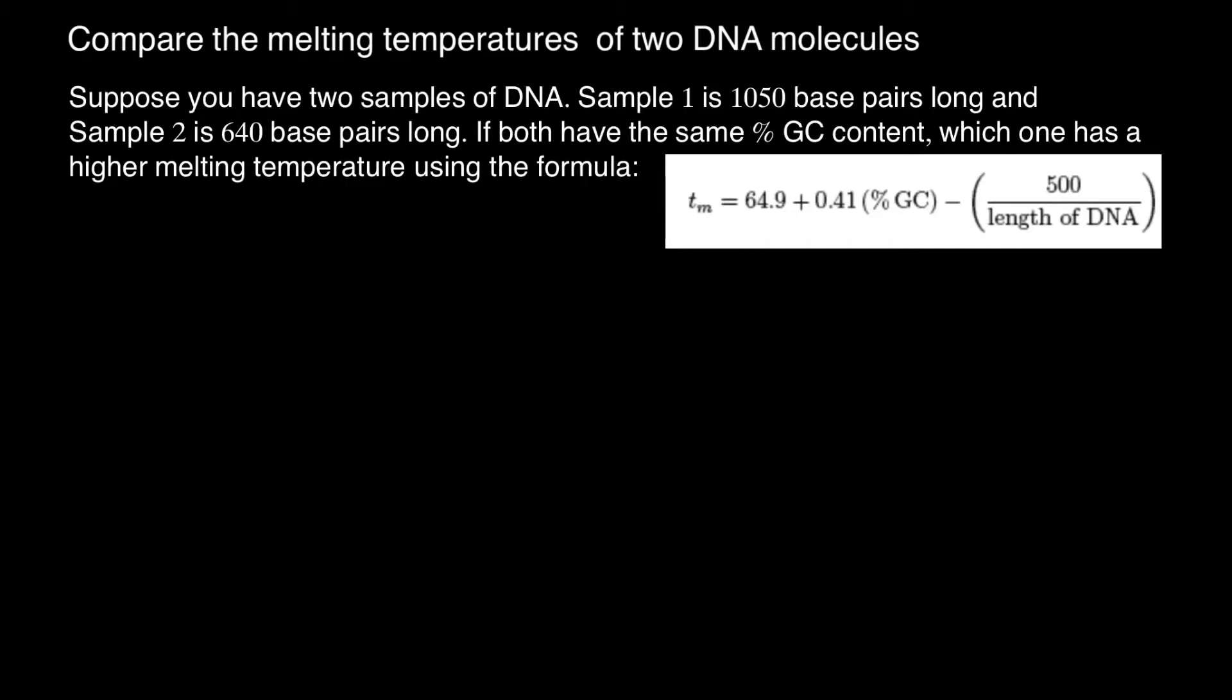Suppose you have two samples of DNA. Sample one is 1050 base pairs long, and sample two is 640 base pairs long. If both have the same percent of GC content, which one has the higher melting temperature using the following formula, we have to find it.